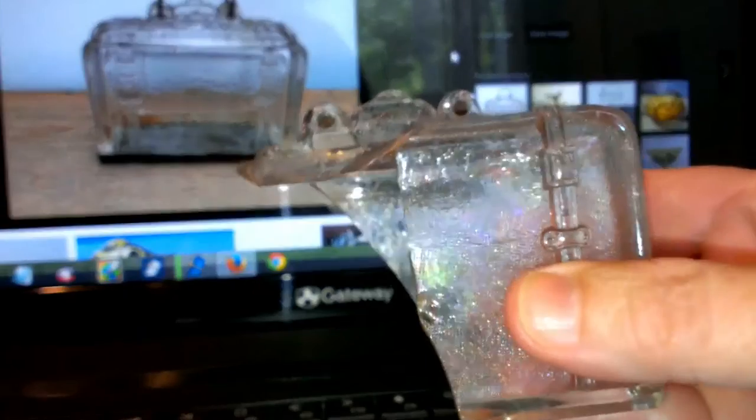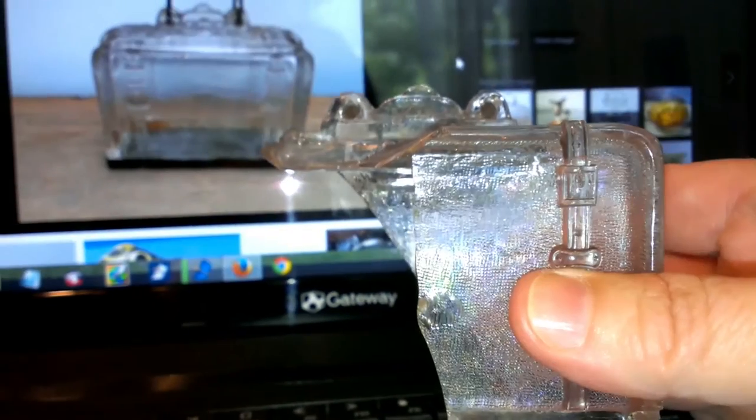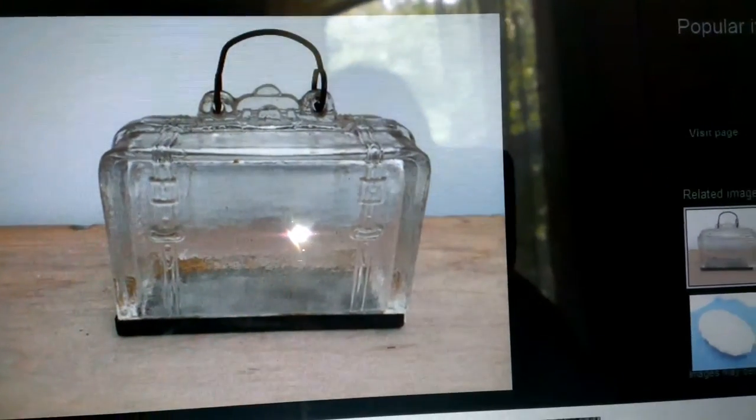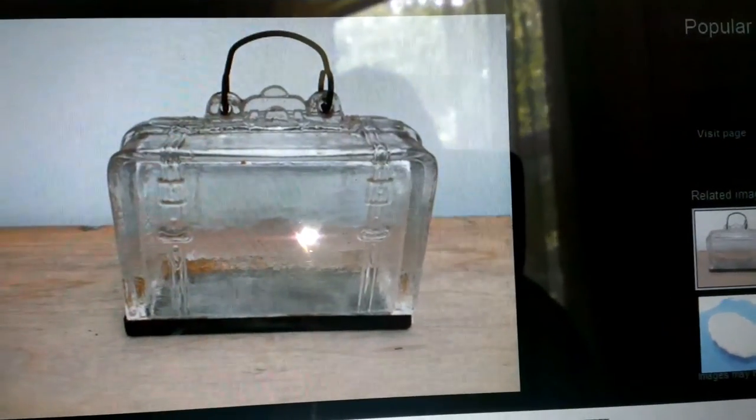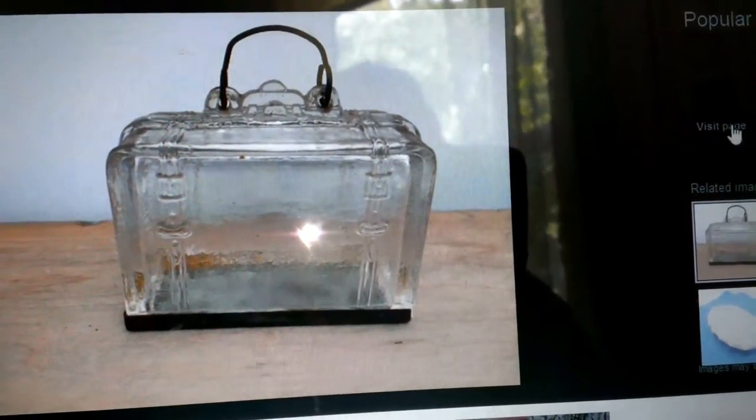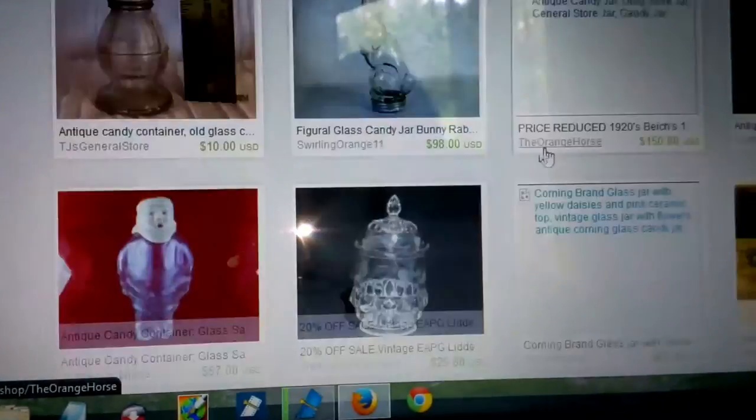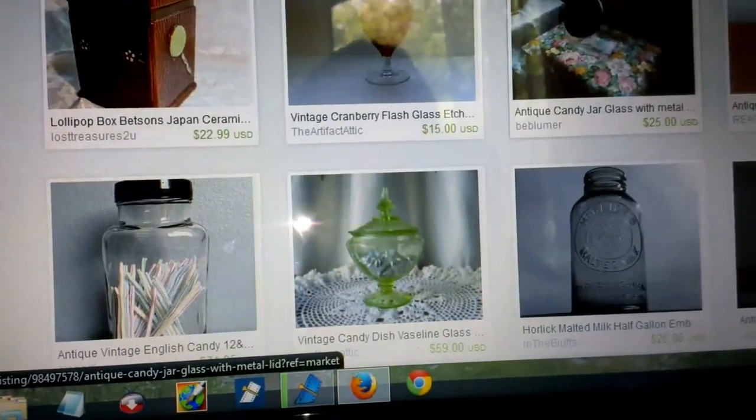Okay, people, once again, the little glass suitcase thing. This is why I brought it home, even though it's broken. Here it is. It was a candy dish. And it says antique candy jar shaped like a glass suitcase. Let's go to that page. And let's see if I can find it. Here it is.